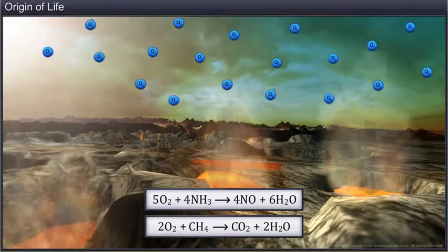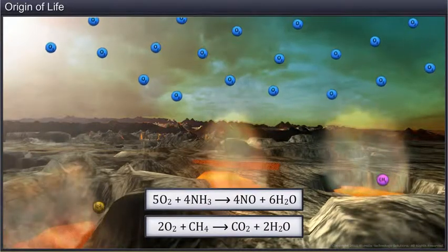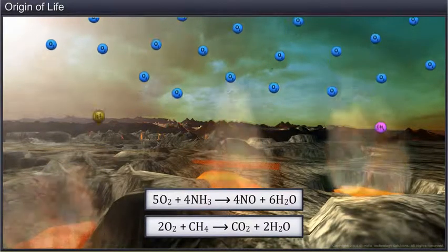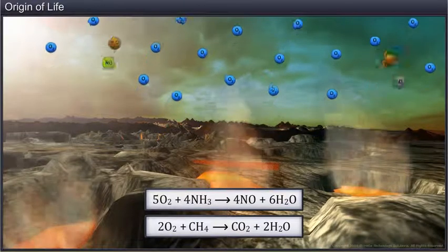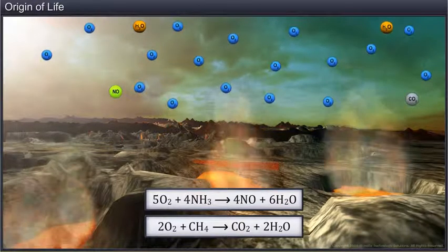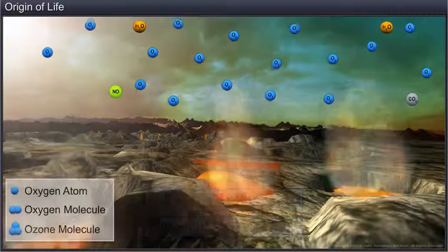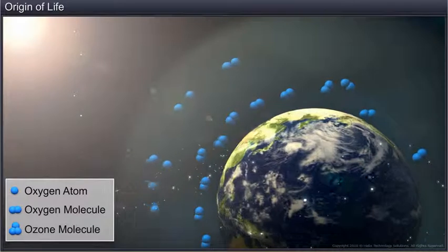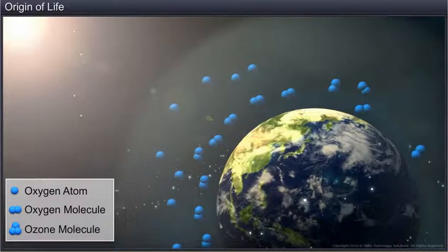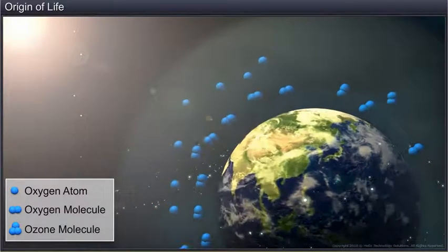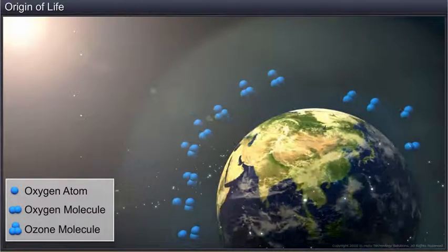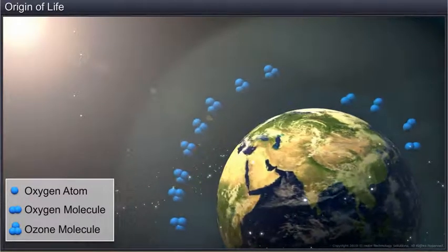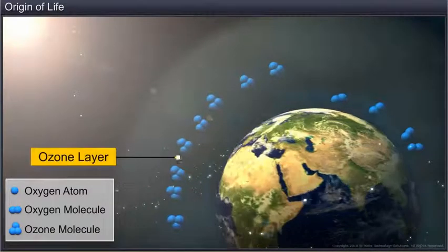Thereafter, oxygen combined with ammonia and methane, which led to the formation of water, carbon dioxide, and other gases. The high-energy ultraviolet rays of the sun struck the oxygen molecule, and split it into oxygen atoms, which in turn reacted with other oxygen molecules to form ozone, and thus the ozone layer was formed.